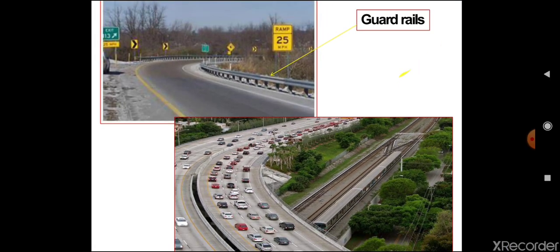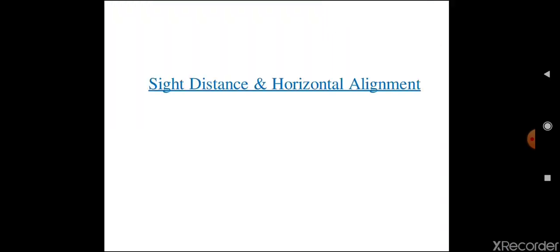In this slide you can see guard rails, which are used to prevent the movement of vehicles out from the road. Next is sight distance and horizontal alignment.